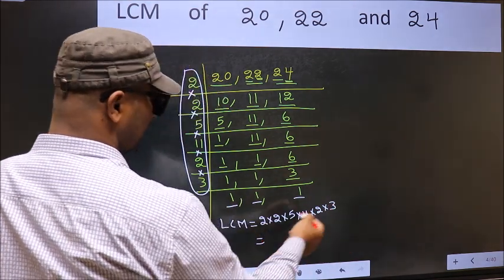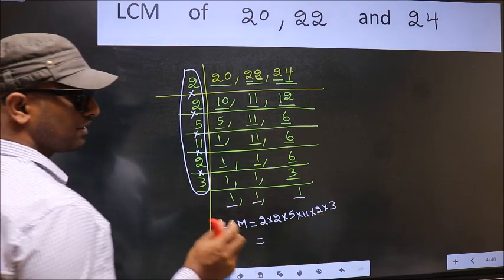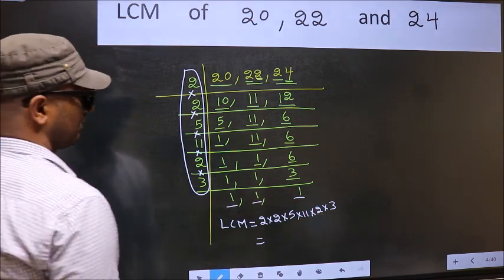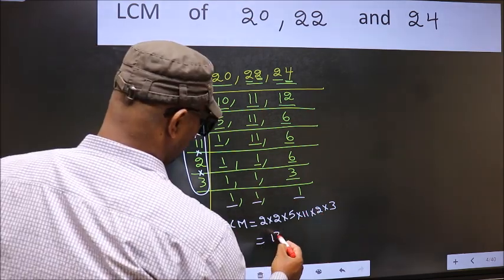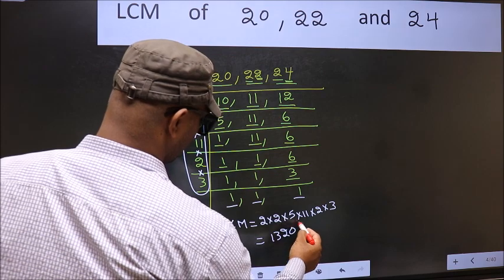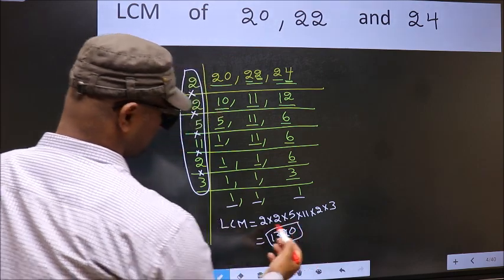When we multiply these numbers we get 1320. So our LCM is 1320.